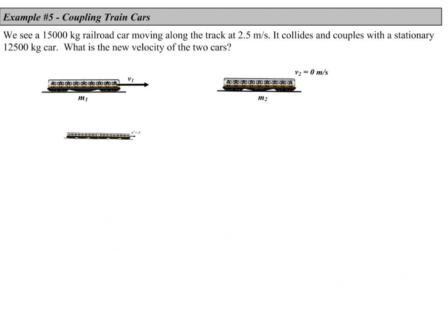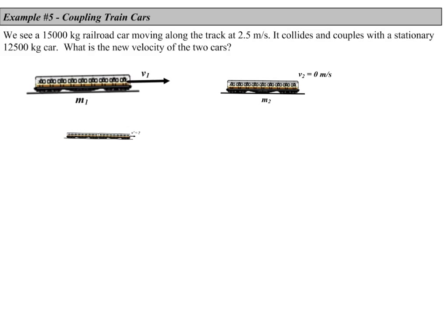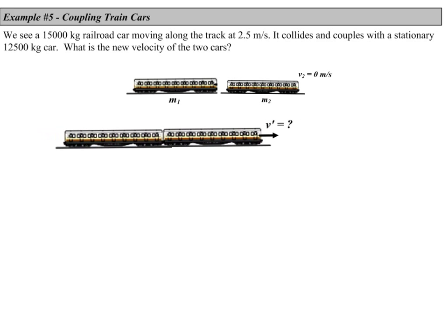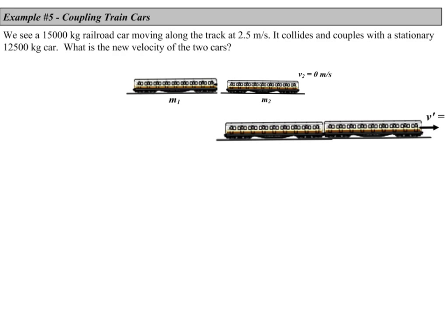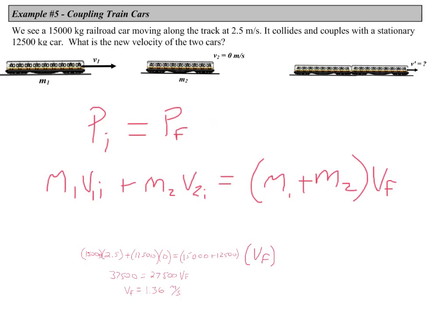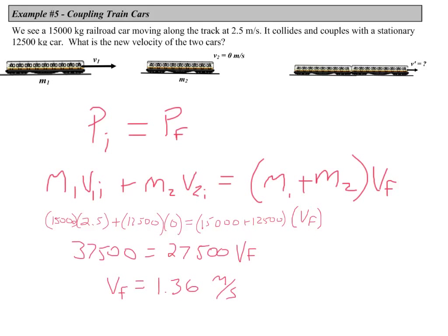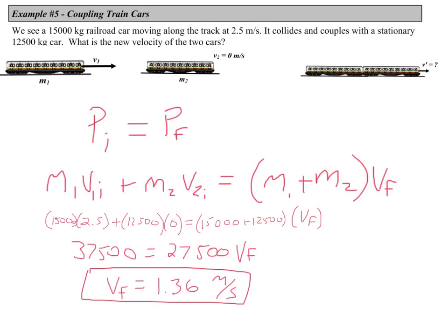In the second example, we have two railroad cars. One starts at rest with zero momentum, and the other moves at 2.5 m/s with some momentum. The moving one collides with the stationary one and the two move forward together with a common velocity. Recognizing this as a perfectly inelastic collision, the two objects combine into a single mass. Plugging in values, we get a final velocity of 1.36 m/s — positive, so both trains move off to the right.